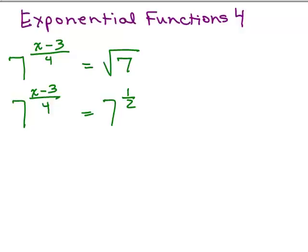So when the bases are the same, then that means the exponents are equal. So that means x minus 3 over 4 is the same thing as 1 half. So now we need to solve that equation, x minus 3 over 4 is equal to 1 half. And there's a lot of ways you could solve this equation.